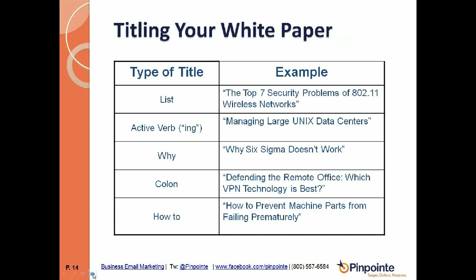For titling your white paper, you have a few options. One is a list title — for example, 'The Top Seven Security Problems of 802.11 Wireless Network.' Titles beginning with an active verb-ing work well, like 'Managing Large Unix Data Centers.' 'Why' is a good word — 'Why Six Sigma Doesn't Work' is more curiosity-arousing than just 'Six Sigma Doesn't Work.' A colon title pairs a dramatic phrase with an explanatory subtitle, like 'Defending the Remote Office: Which Virtual Private Network Technology is Best.' And of course, 'How to' is always effective.